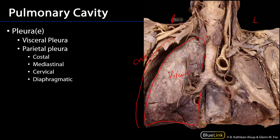The medial surface of that cavity is the mediastinum, and so that is lined by mediastinal pleura. The inferior boundary of the pulmonary cavities is the diaphragm, and so that is covered by diaphragmatic pleura. And then there's a region above the thoracic inlet — above the plane of rib 1 — which has a little cupula, and that cupula is covered by cervical pleura.